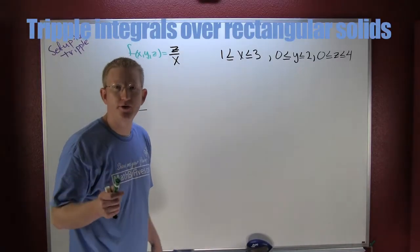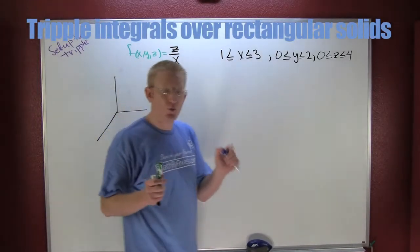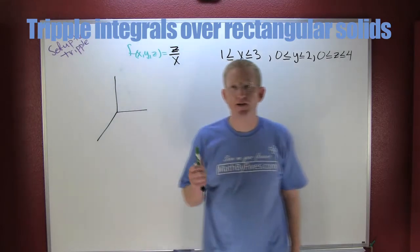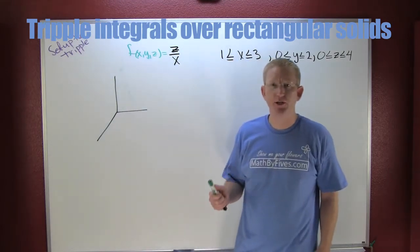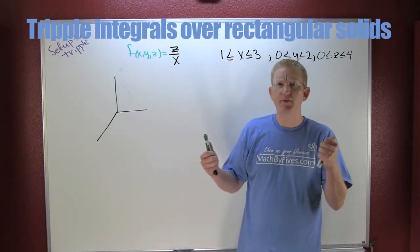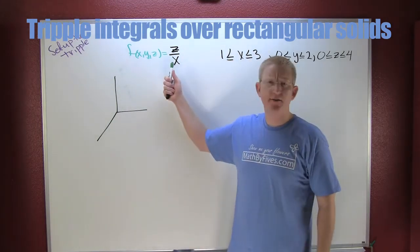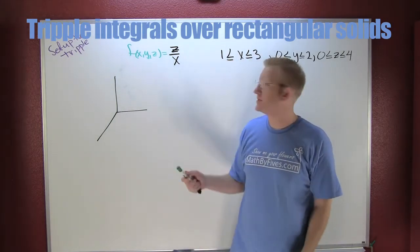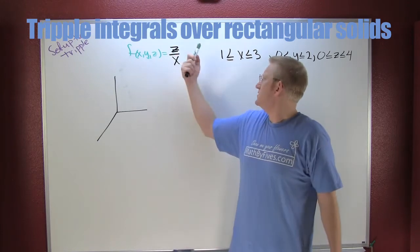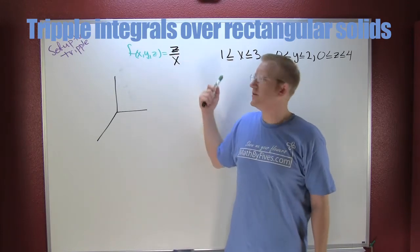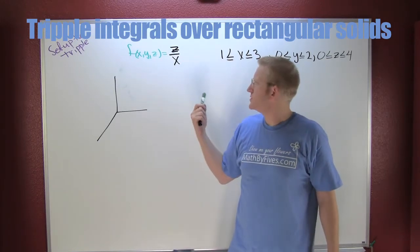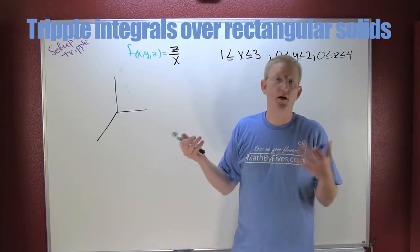Let's set up the triple integral in this case. What we want to do is find the region that we're integrating over. Here I have some surface where z is inversely proportional to x.